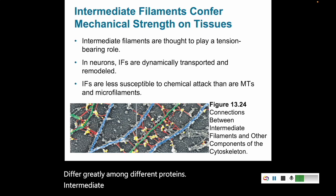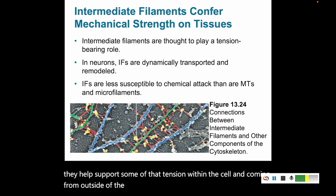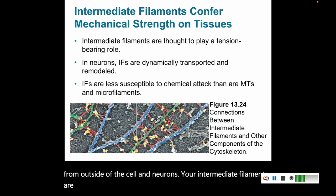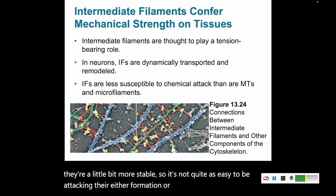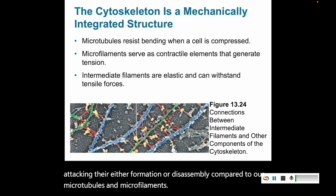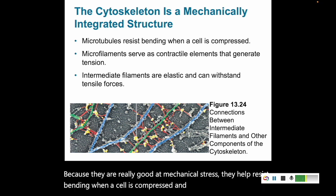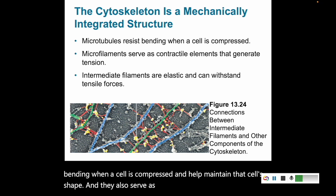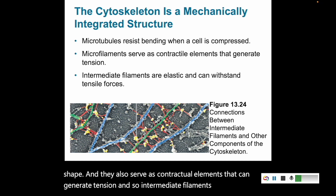Intermediate filaments have an important tension-bearing role — they help support tension within the cell coming from outside of the cell. In neurons, your intermediate filaments are dynamically transported and remodeled. Intermediate filaments are less susceptible to chemical attack; they're a bit more stable, so it's not quite as easy to attack their formation or disassembly compared to our microtubules and microfilaments. Because they are really good at mechanical stress, they help resist bending when a cell is compressed and help maintain that cell shape. They also serve as contractile elements that can generate tension, and so intermediate filaments are elastic and able to withstand those tensile forces.